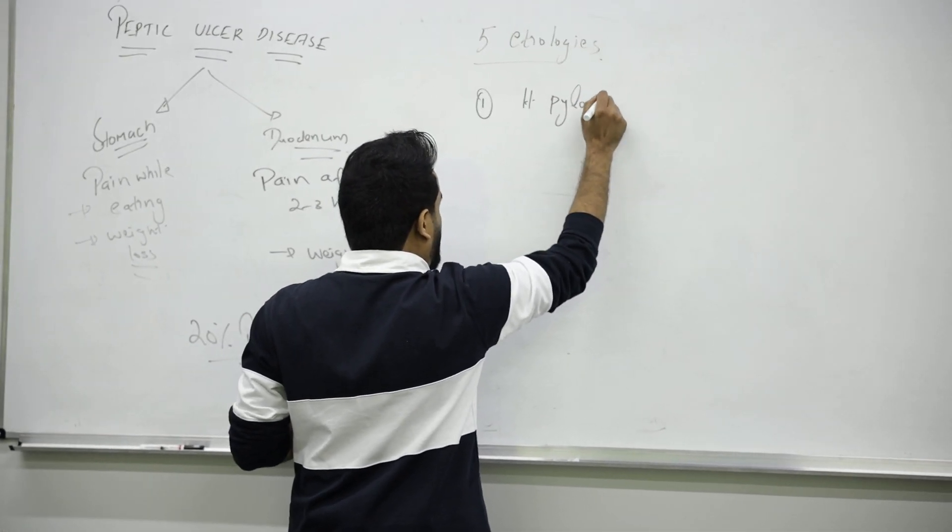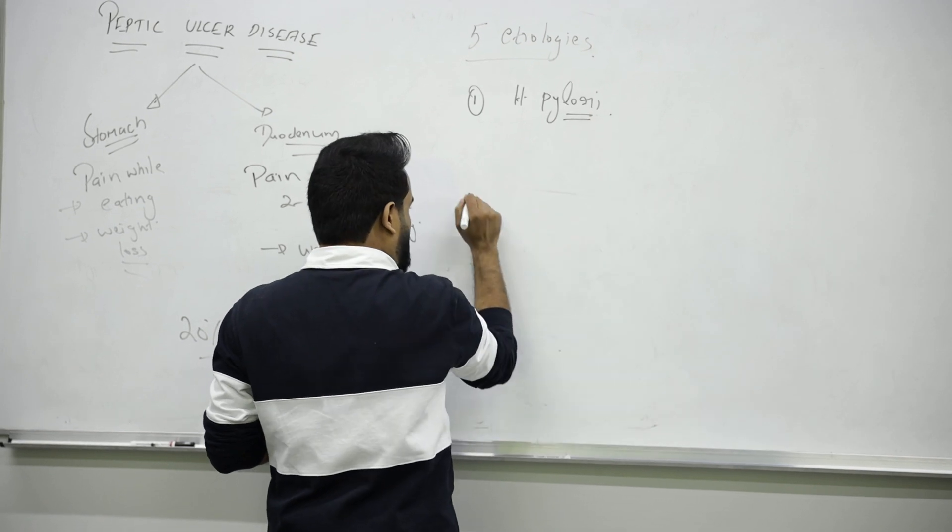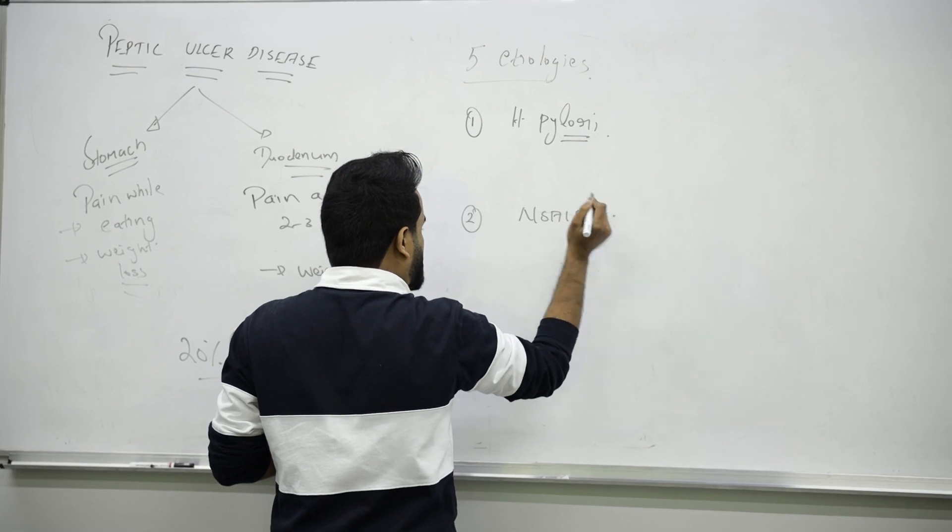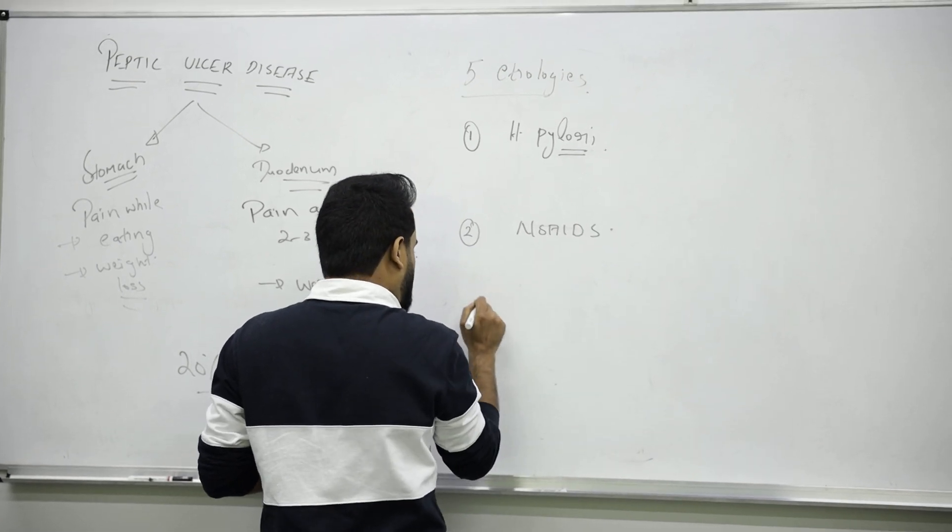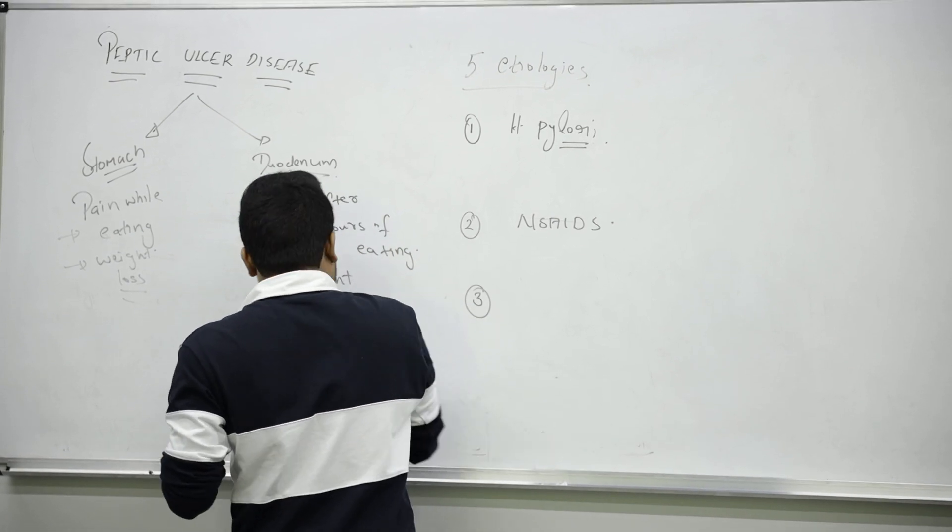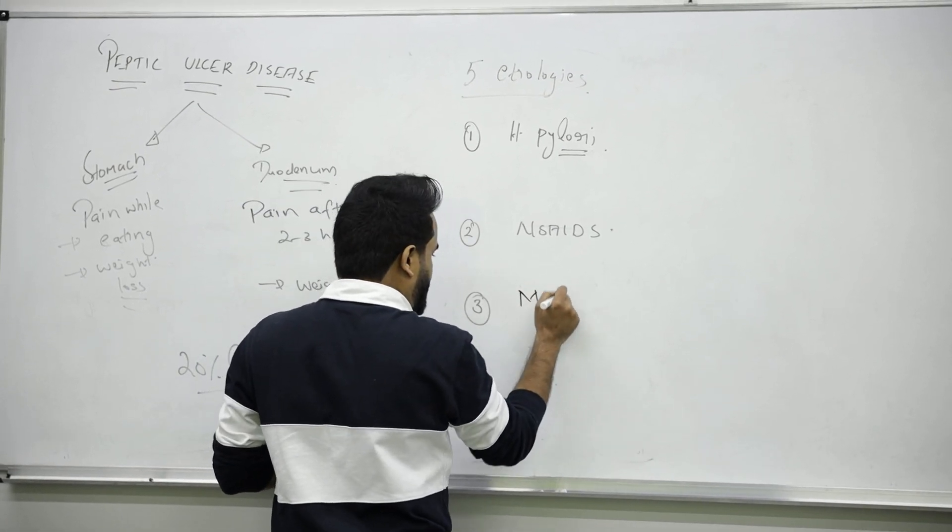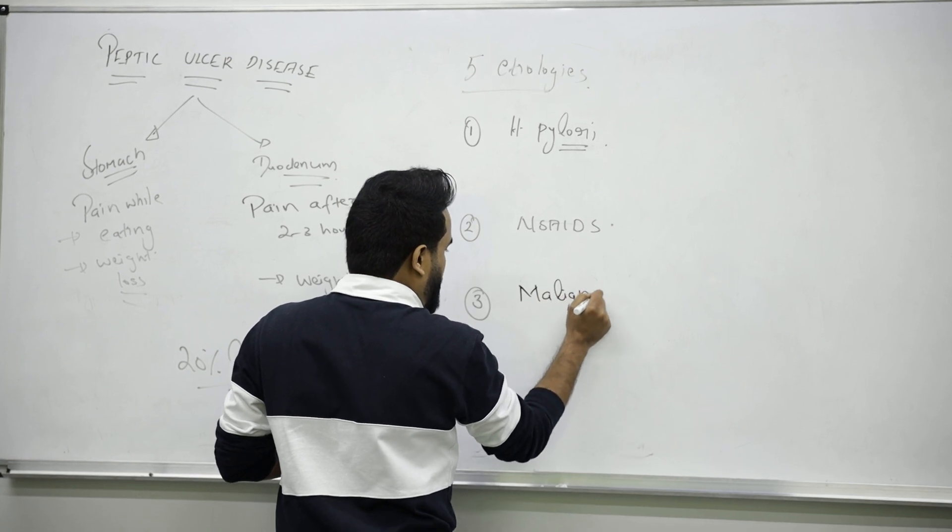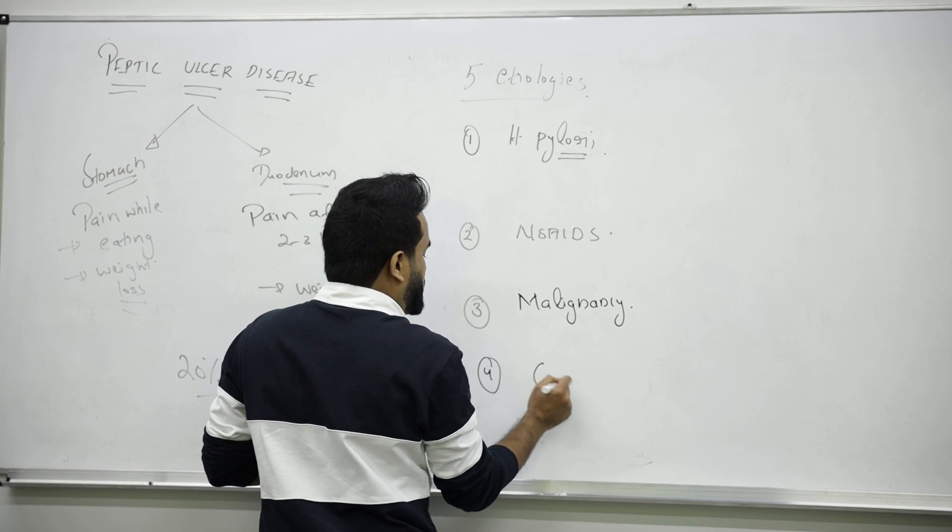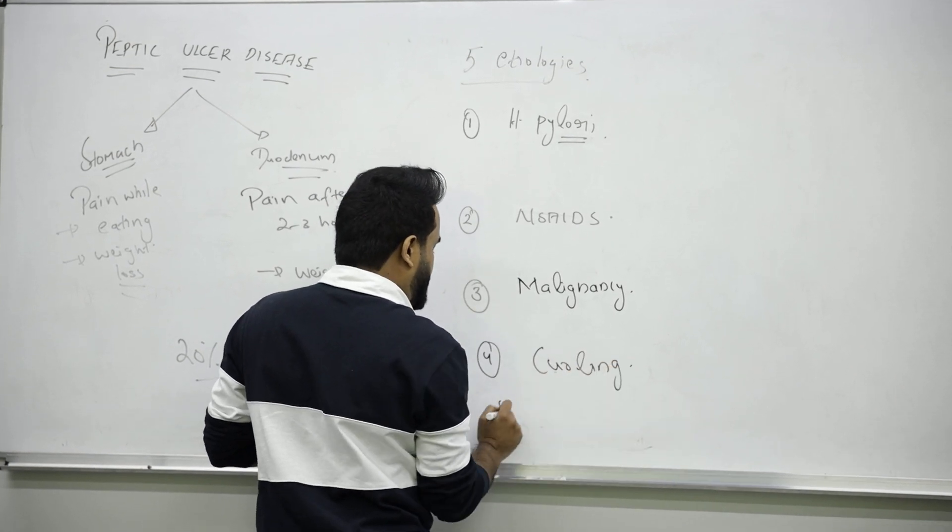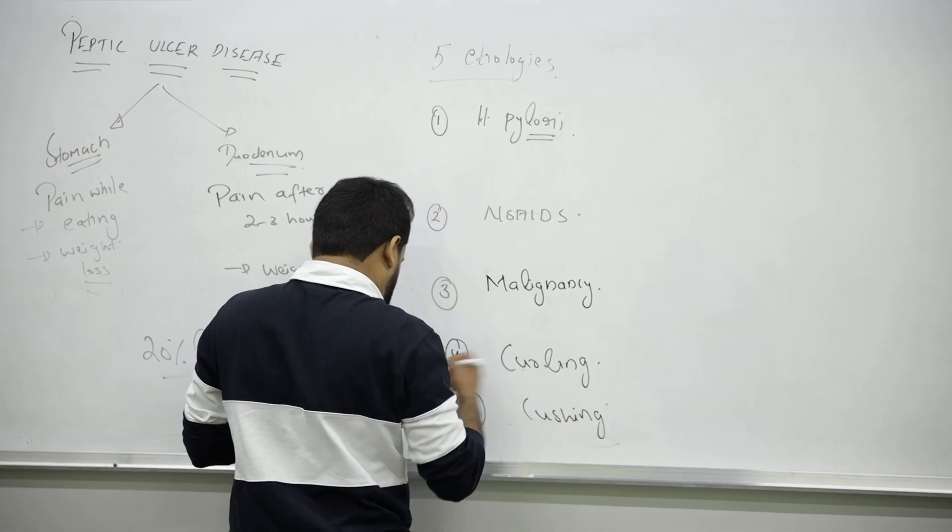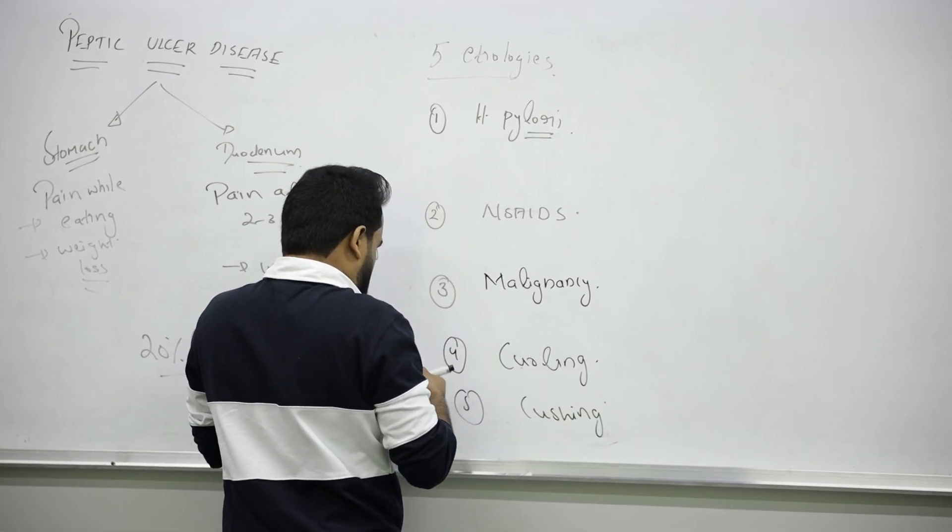Second, use of NSAIDs. Third can be due to cancer or malignancy. Fourth one is Curling ulcer. Fifth, that is Cushing ulcer. Then it can be due to gastrinoma.